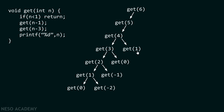This time n equals one and one is not less than one, so we have to call the get function. However, we already know what get(1) is going to call — get(1) calls get(0) as well as get(-2). Since our purpose is to know how many calls are made to the get function, we know get(1) will make two calls. Therefore, we simply note plus two calls here. Apart from this get(1), two more calls have to be made.